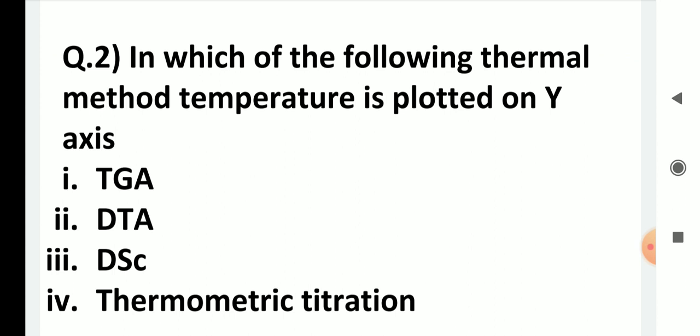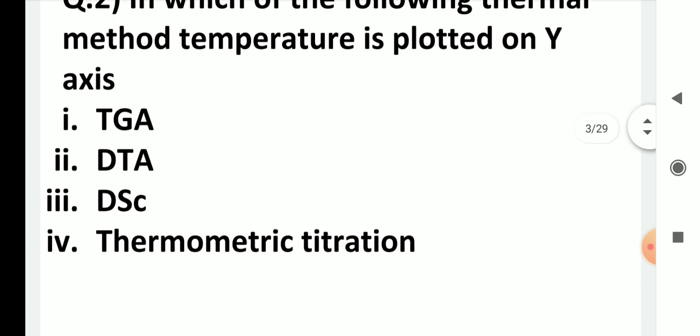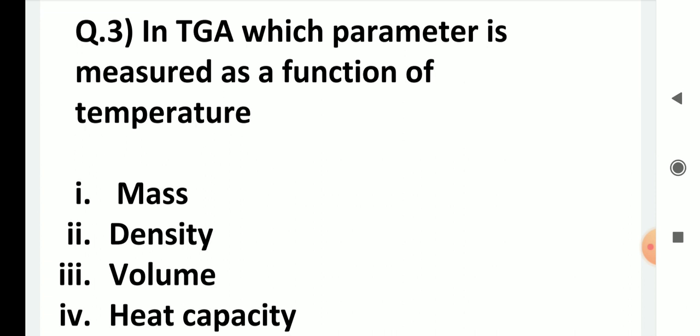The next question is: in which of the following thermal methods is temperature plotted on the y-axis? Choices: TGA, DTA, DSC, and thermometric titration. In TGA, DTA, and DSC, temperature is plotted on the x-axis — mass vs. temperature, ΔT vs. temperature, and heat vs. temperature respectively. In thermometric titration, temperature is measured as a function of volume of reagent added, so temperature is on the y-axis. The answer is the fourth option.